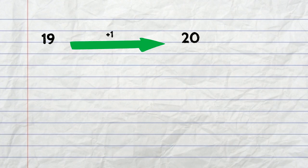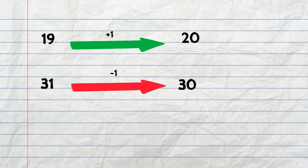For example, we can round number 19 to its closest 10 which is 20 by adding a 1. We can round number 31 to its closest 10 which is 30 by taking away 1. We can round number 97 to its closest 10 which is 100 by adding 3.